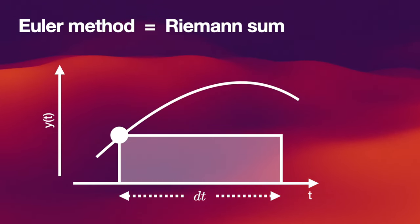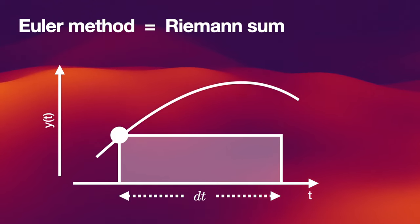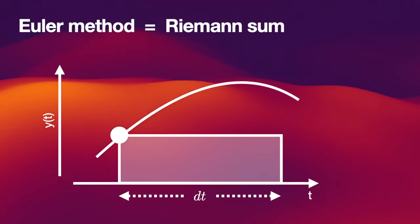Now this is not a good approximation, but if we make the interval small enough, it gets better and better. If we think of this Riemann sum in terms of solving an ordinary differential equation, then the Riemann sum is equivalent to the Euler method.